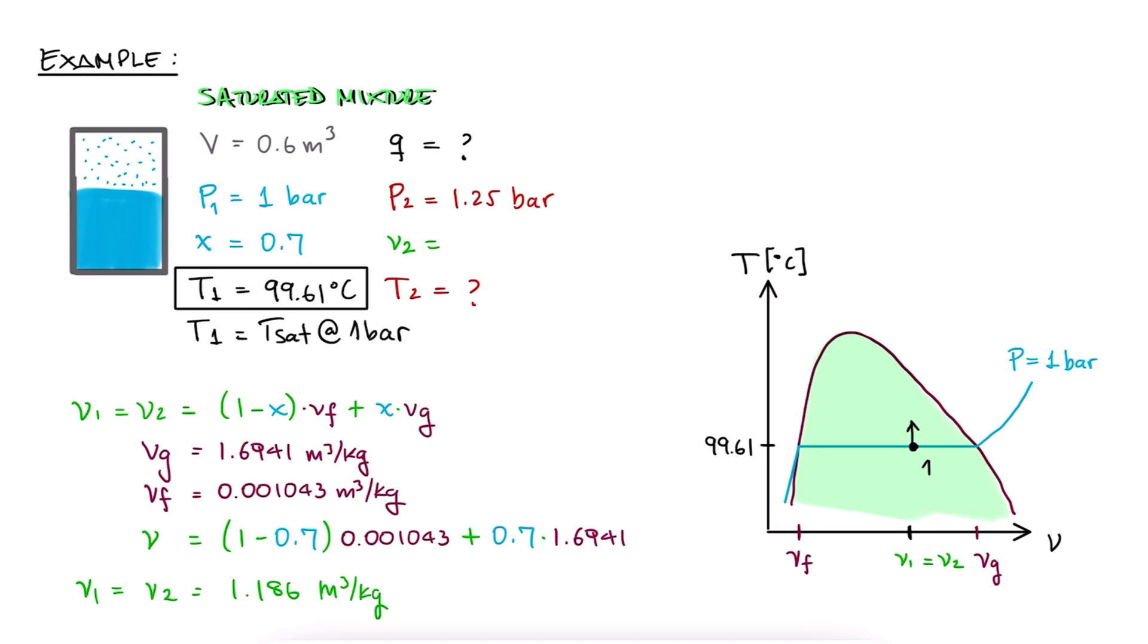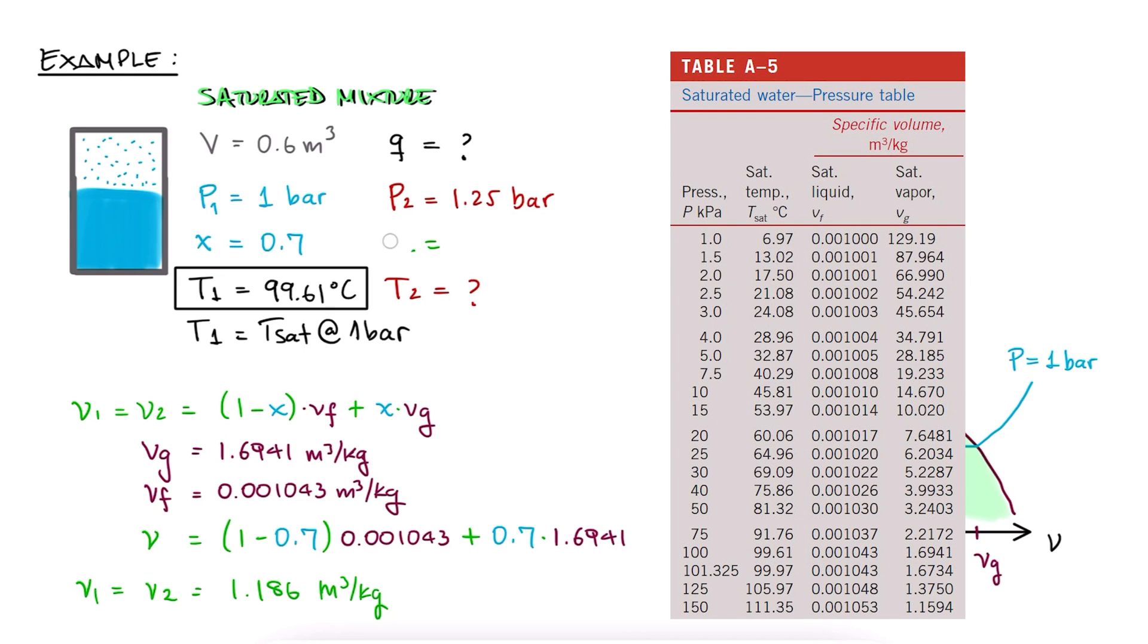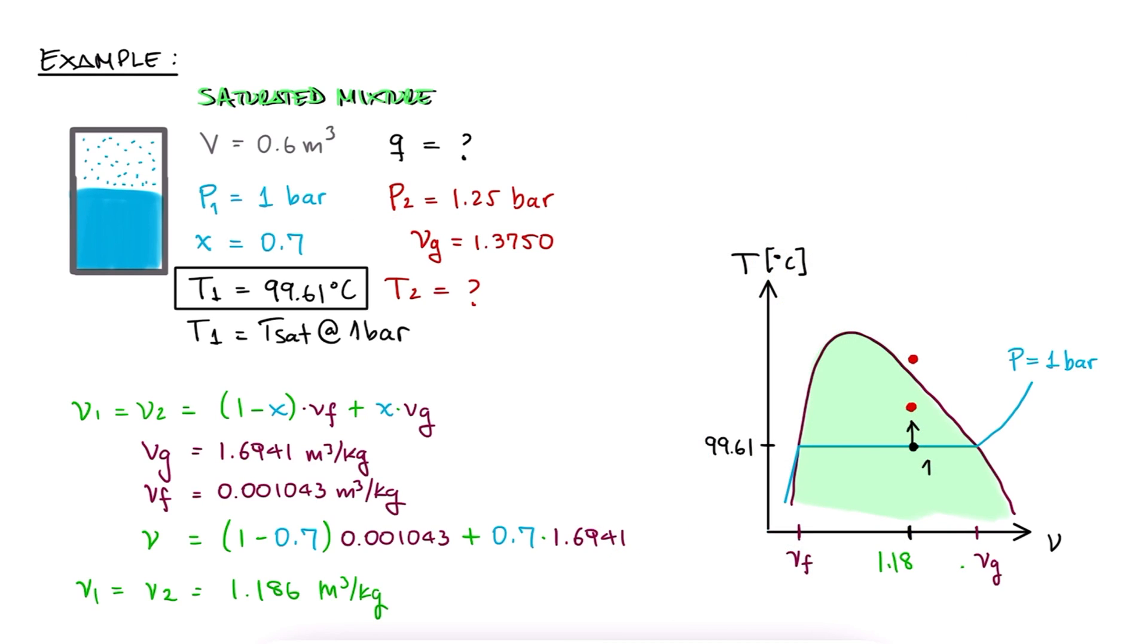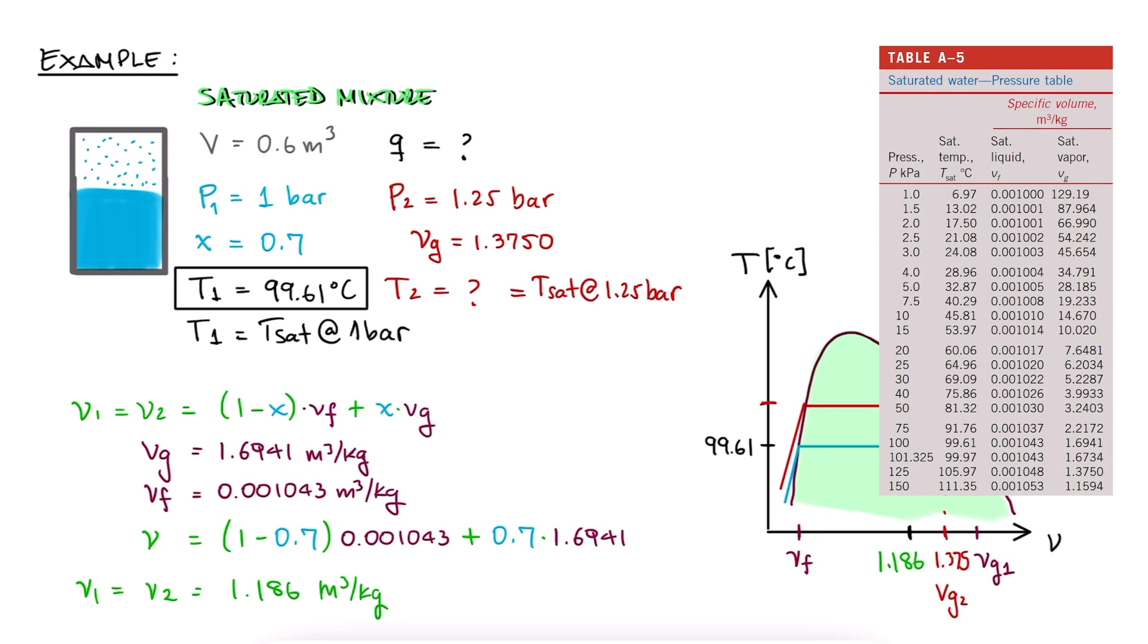Now, this second state can be inside the dome and therefore the water is still a saturated mixture, or outside the dome and the water is superheated. To find out, we look up vg for P2, and since the specific volume after adding heat is lower than the specific volume for a saturated vapor at that pressure, we conclude that the water is still a saturated mixture. And therefore, T2 is the saturation temperature for P2. Looking this up, we find 105.97 degrees Celsius.